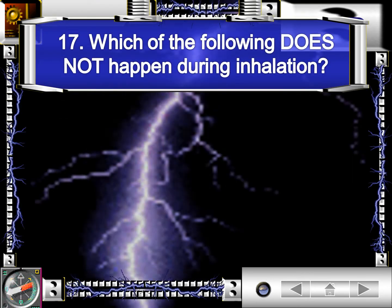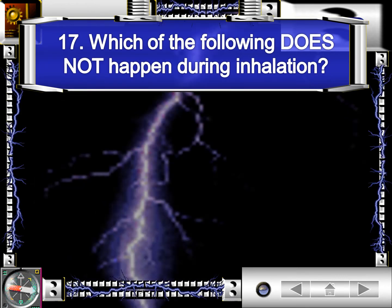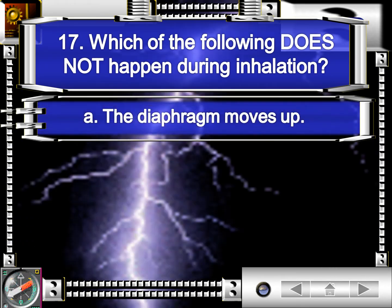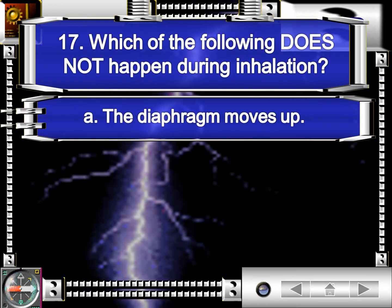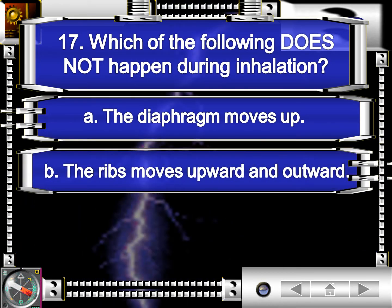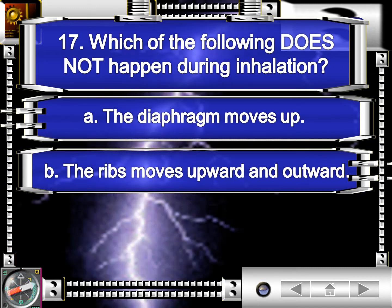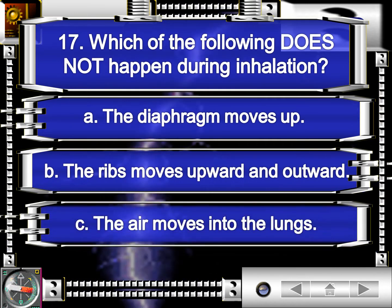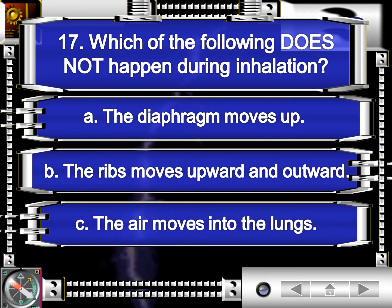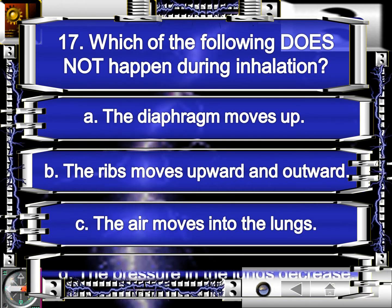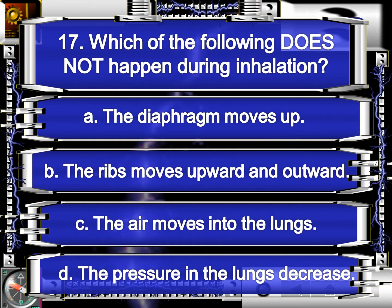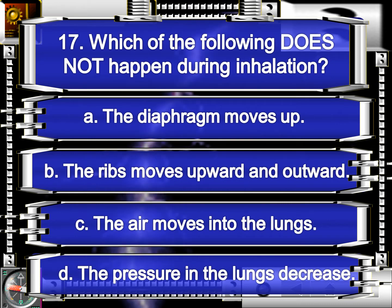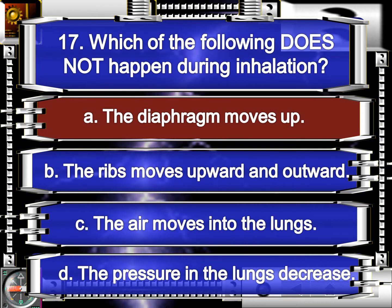Number 17. Which of the following does not happen during inhalation? Letter A, the diaphragm moves up. Letter B, the ribs move upward and outward. Letter C, the air moves into the lungs. Or letter D, the pressure in the lungs decreases. The correct answer is letter A, the diaphragm moves up.